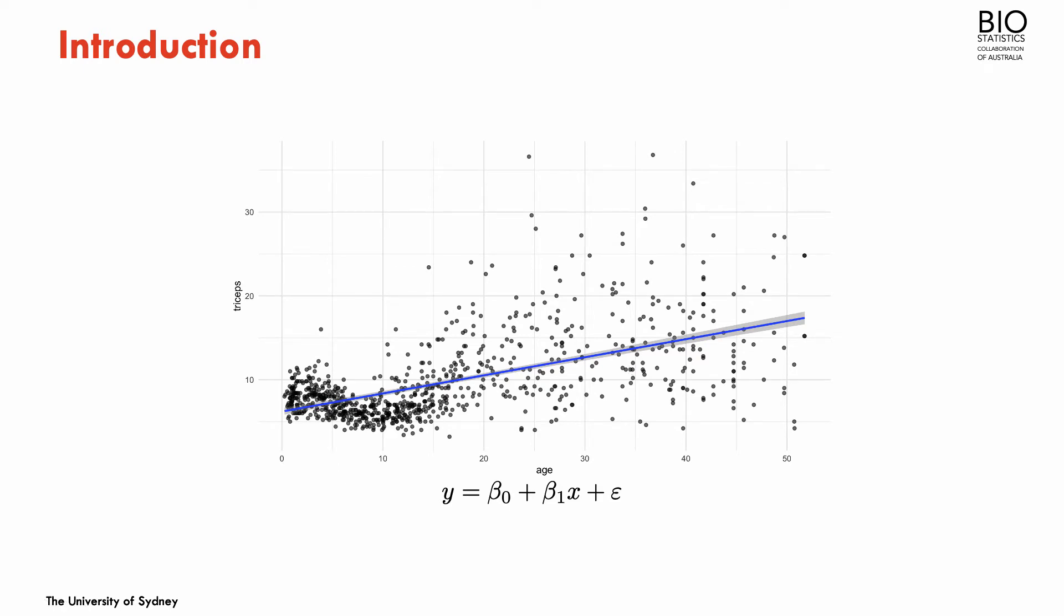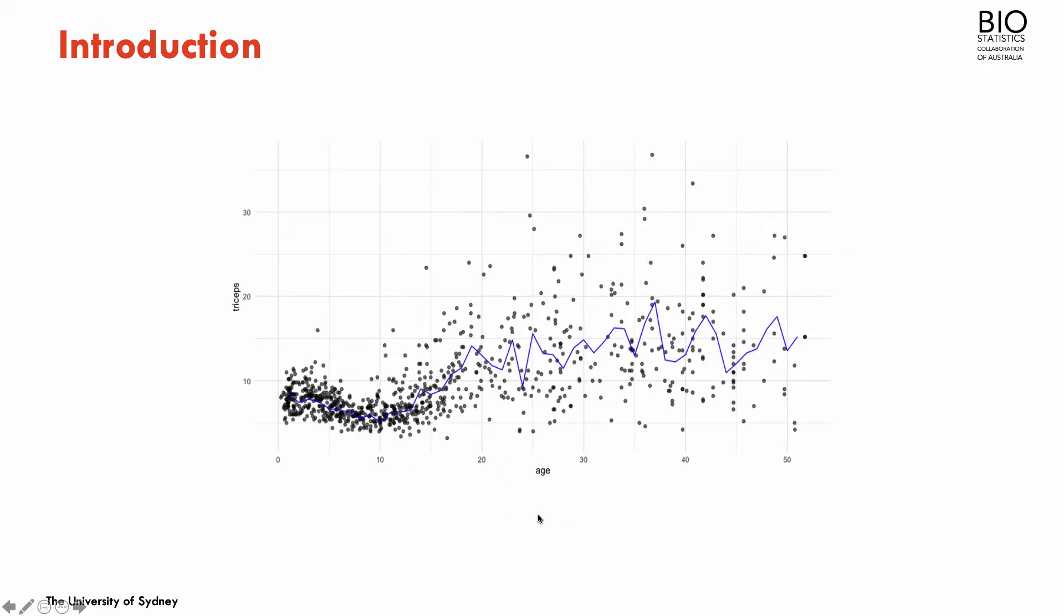We've seen another method that is completely the opposite of this completely parametric model, which is the k-nearest neighborhood regression. We could fit here a line for the association between age and triceps, but this has certain limitations. In particular, it's quite wiggly, this association. It really is a very local method. And as we've said in the previous modules, it's very hard to extend this to more than one predictor, due to the curse of dimensionality.